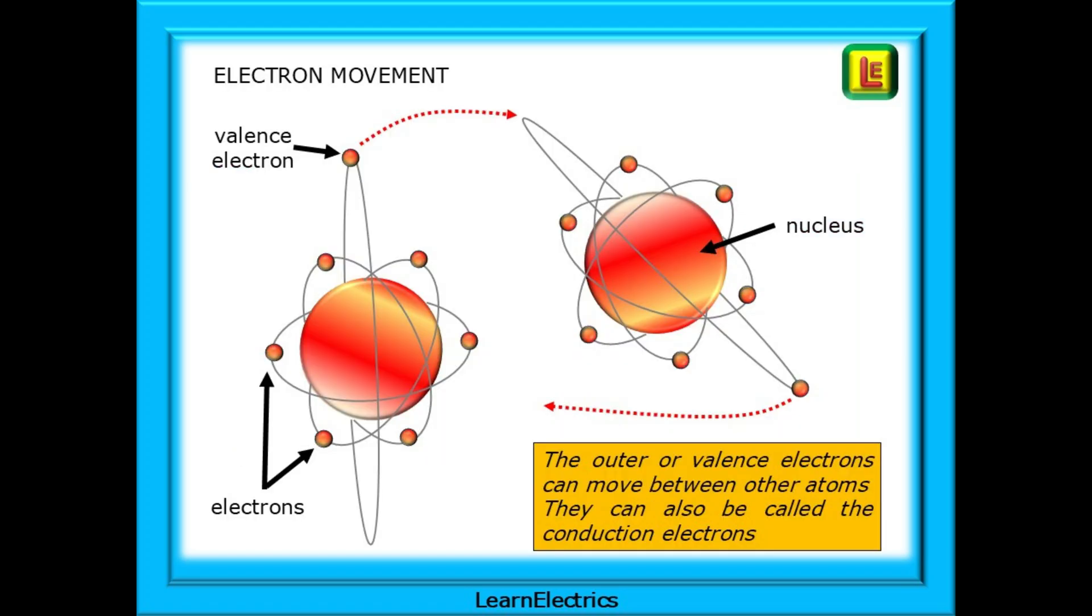An earlier video showed how electrons move around a circuit and through a copper wire, and we will leave a link to that video in the description. The copper atoms will have electrons orbiting around them. The outermost electrons, called valence electrons or conduction electrons, are only loosely attached to the atom and can move easily between other atoms.